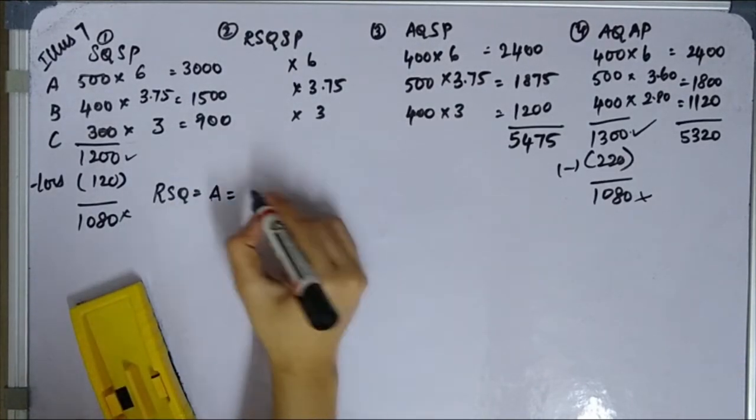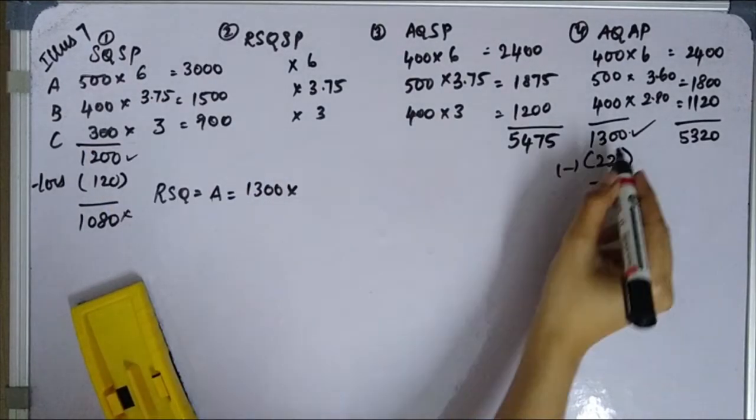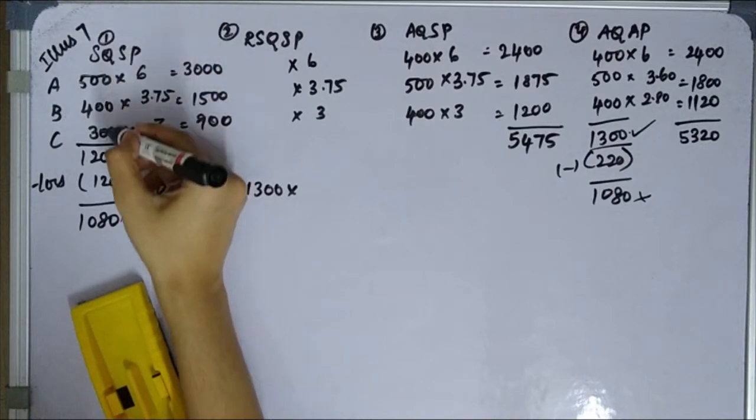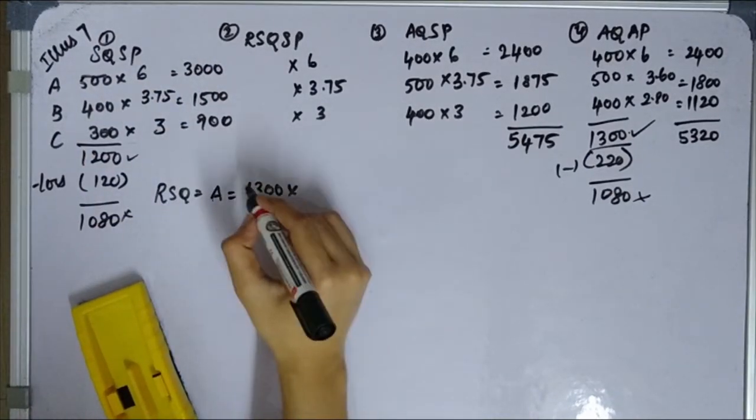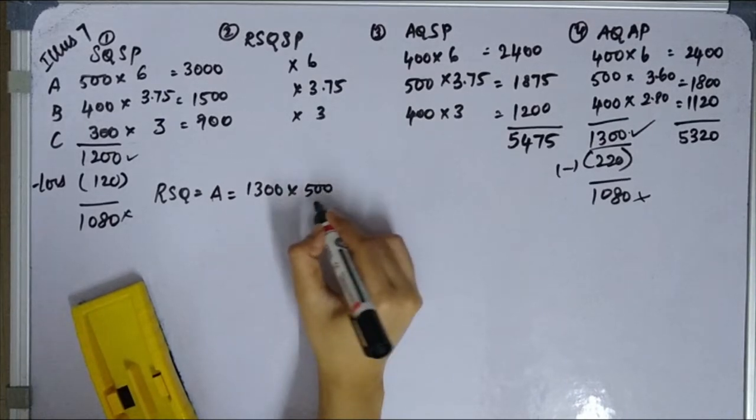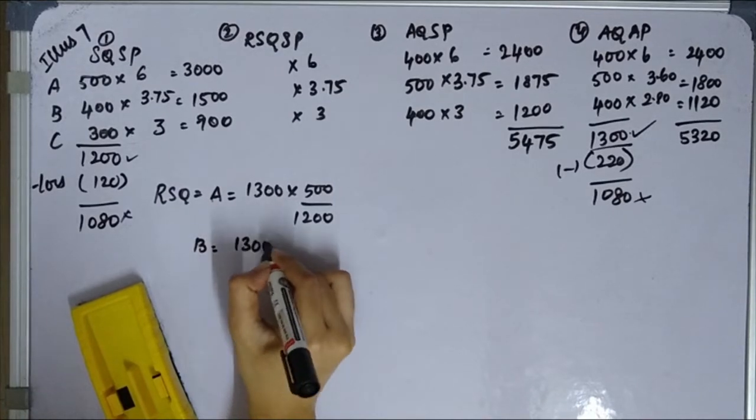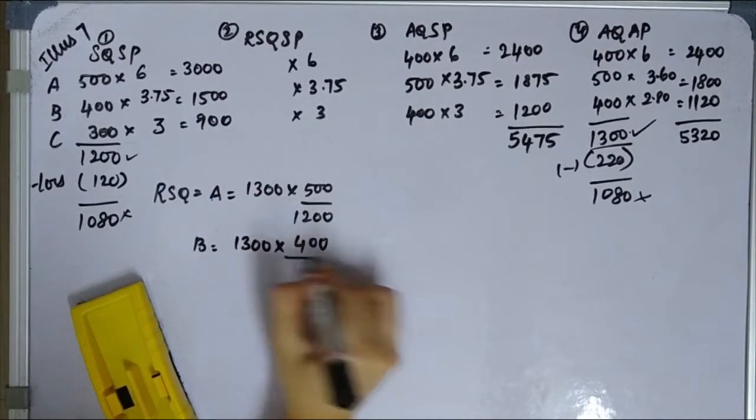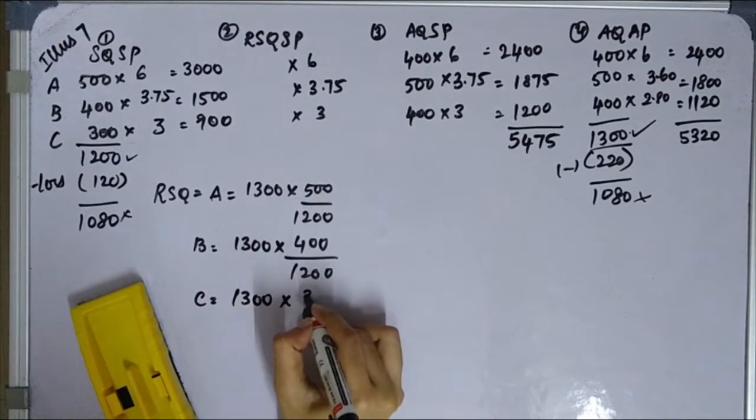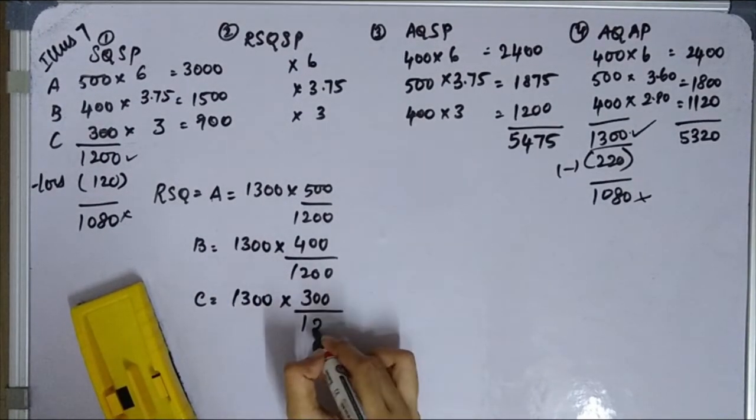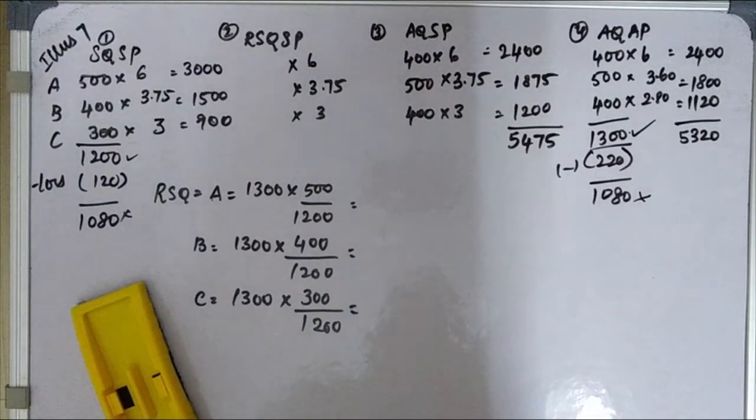For A, 1,300 into, the total actual quantity in standard units ratio is 500, 400, 300. So 1,300 into 500 divided by 1,200. For B is 1,300 into 400 divided by 1,200. And for C, 1,300 into 300 divided by 1,200.